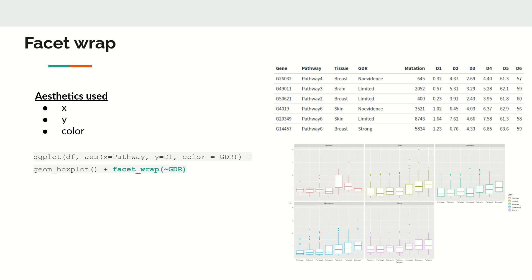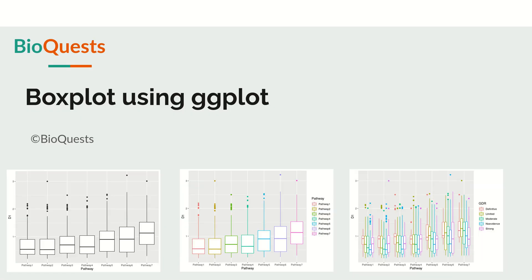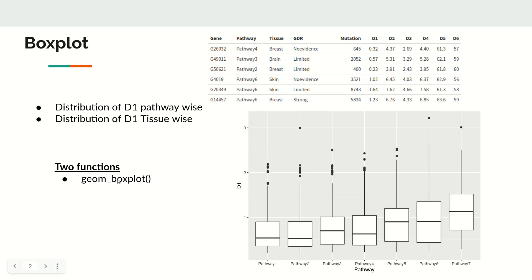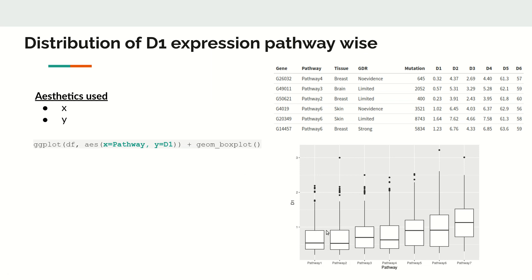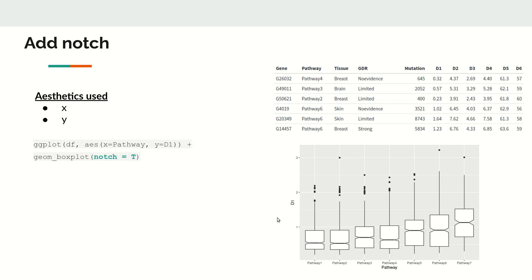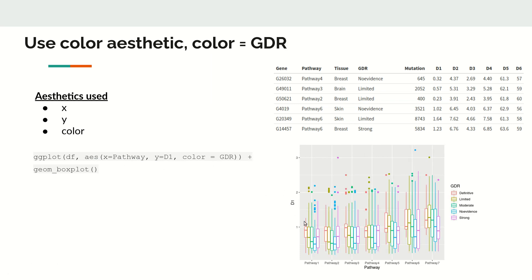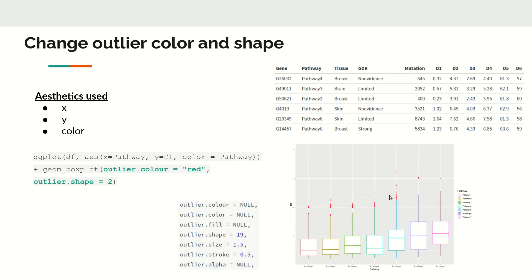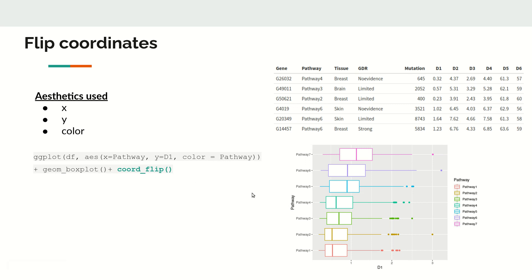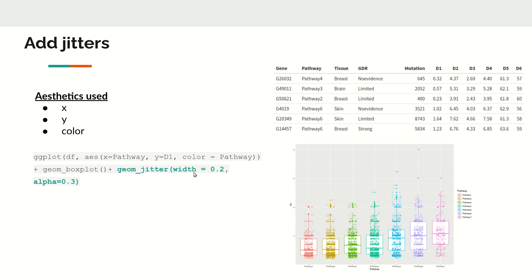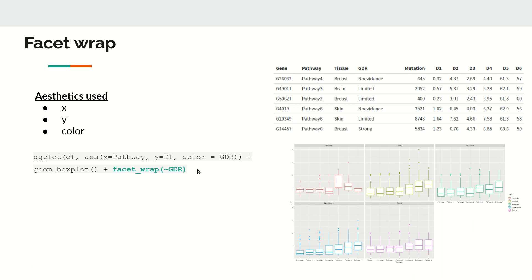To summarize, we added geom_boxplot with x and y aesthetics, then notch = TRUE, then color or fill by pathway, then changed outlier color and shape, then used coord_flip to change orientation, then added geom_jitter with width and alpha parameters, and finally used facet_wrap to split the plot by category.